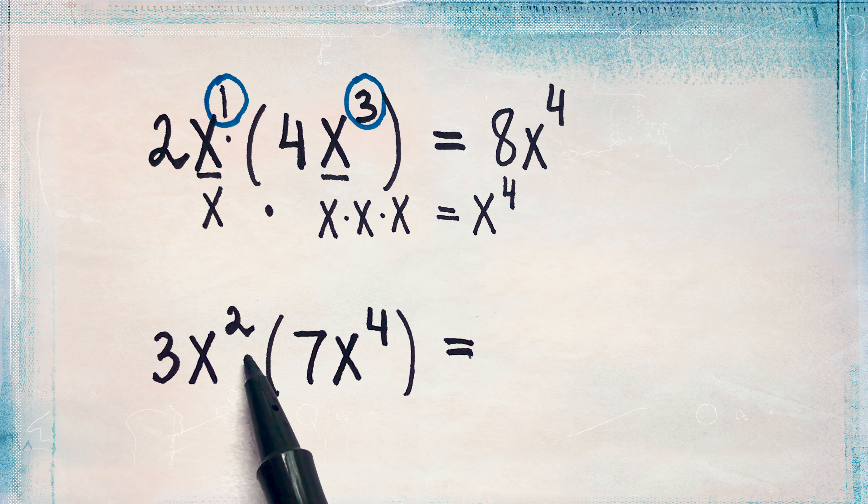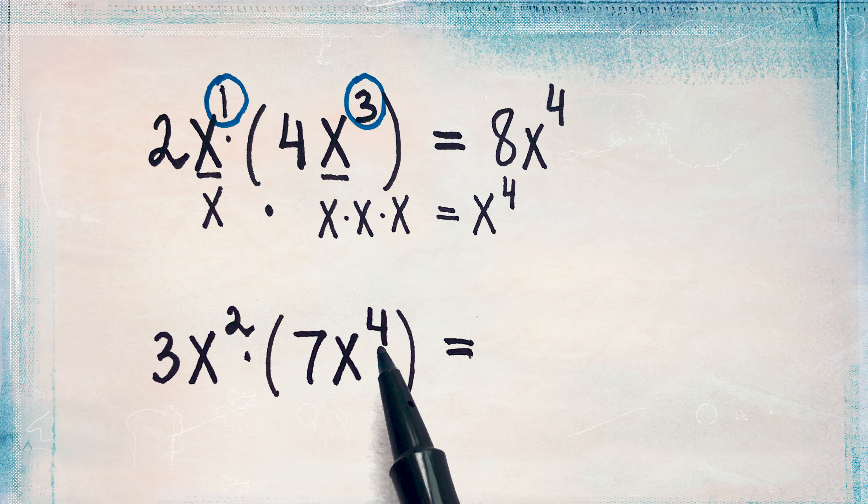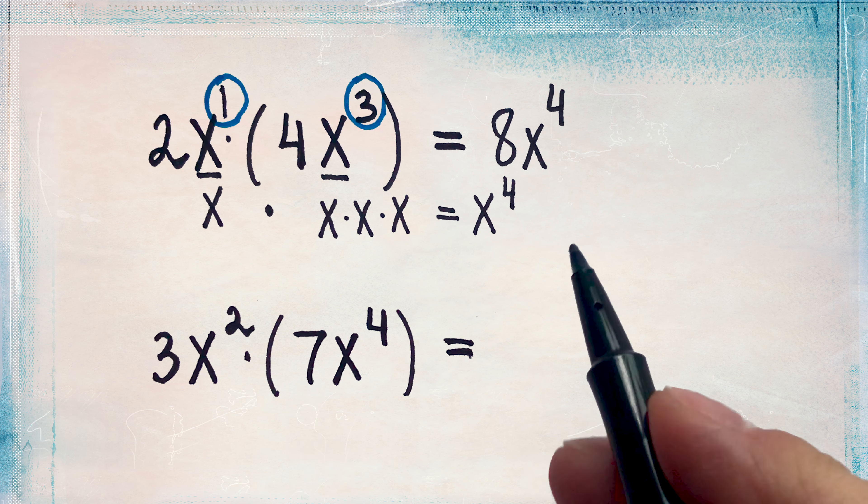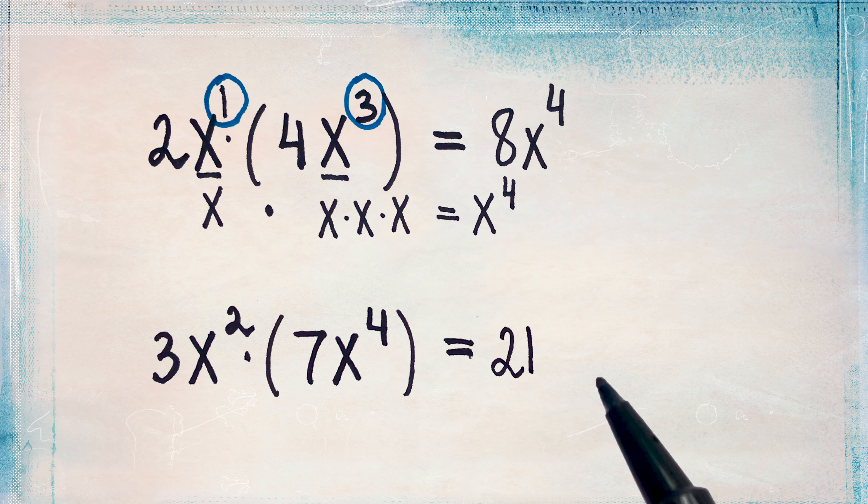3x squared is multiplied by 7x to the 4th. So first we multiply the numbers together. 3 times 7 is 21. Then we will multiply the x's together.